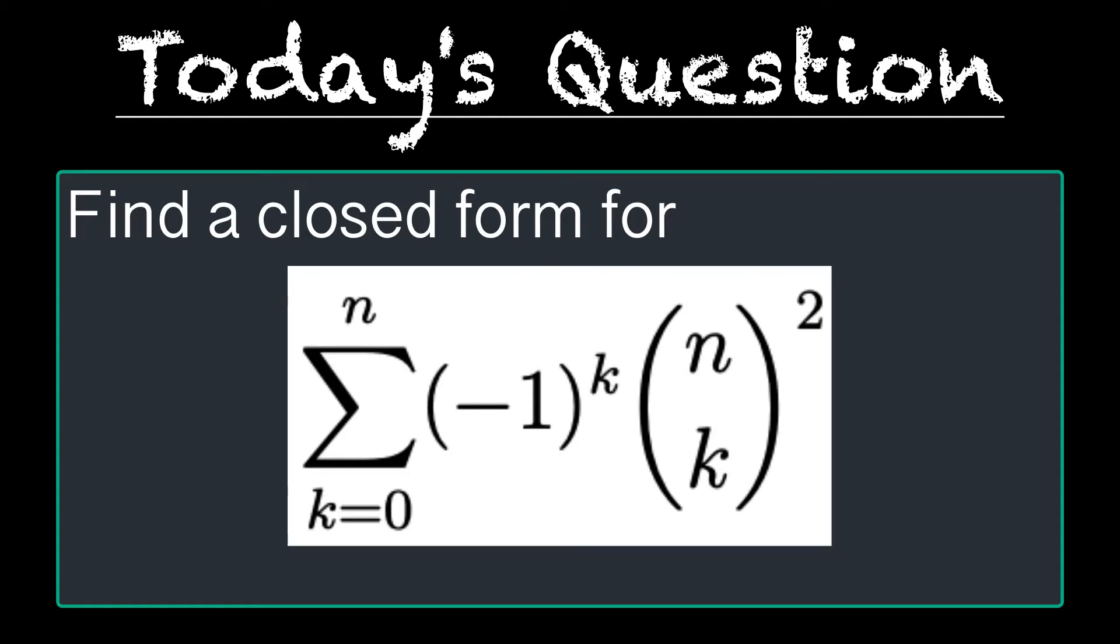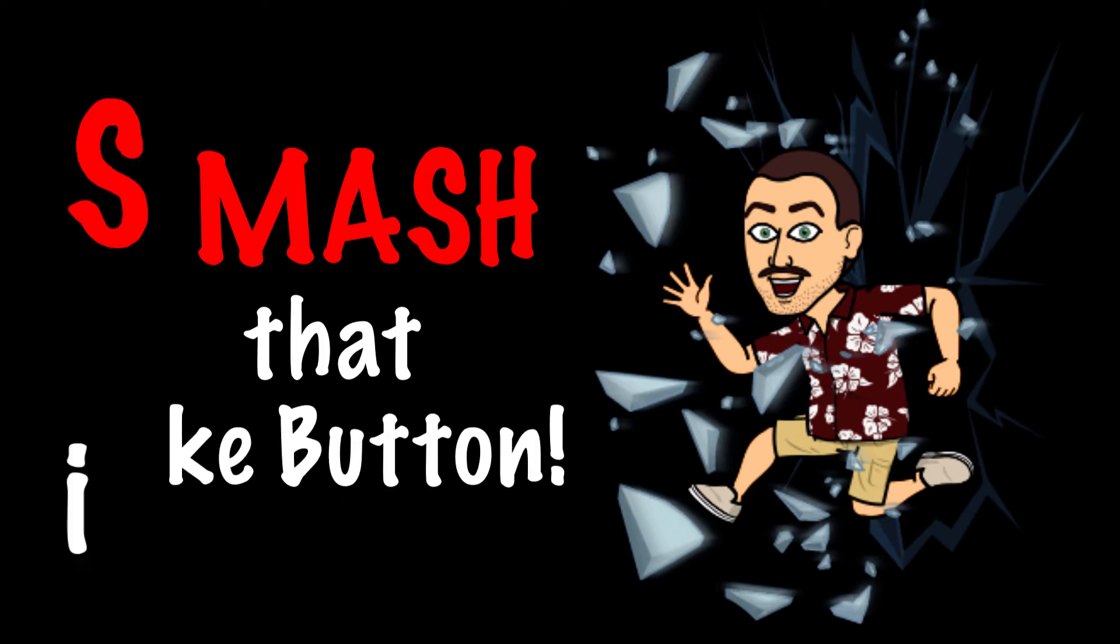The question we're working on today is find a closed form for the sum from k equals 0 to n of negative 1 to the k times n choose k squared. Smash that like button and let's get started.